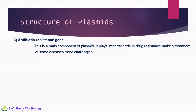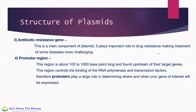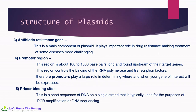Another component is the antibiotic resistance gene, which is a main component of plasmids. It plays an important role in drug resistance, making treatment of some diseases more challenging. Another site is the promoter region, which is about 100 to 1000 base pairs long and found upstream of target genes. This region controls the binding of RNA polymerase and transcription factors, and plays a large role in determining where and when your gene of interest will be expressed. Another site is the primer binding site — a short sequence of DNA on a single strand typically used for the purposes of PCR amplification or DNA sequencing.